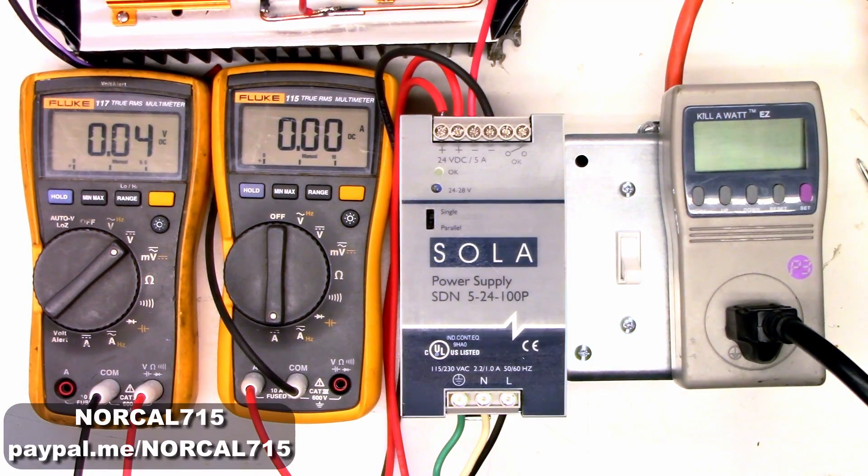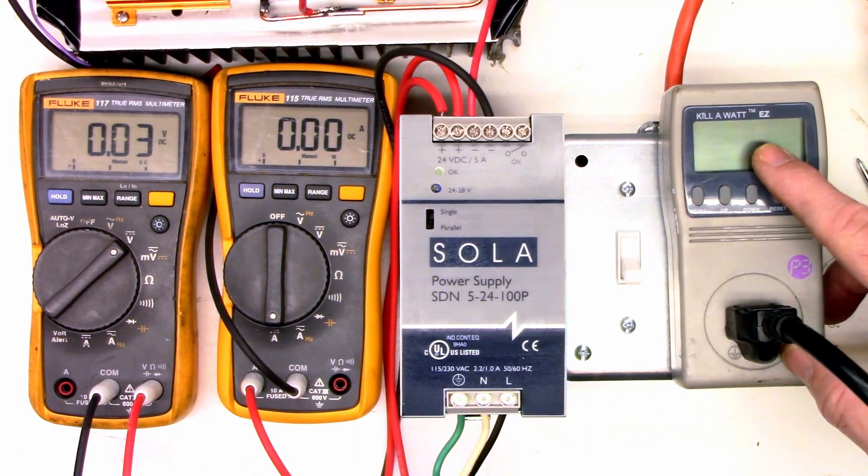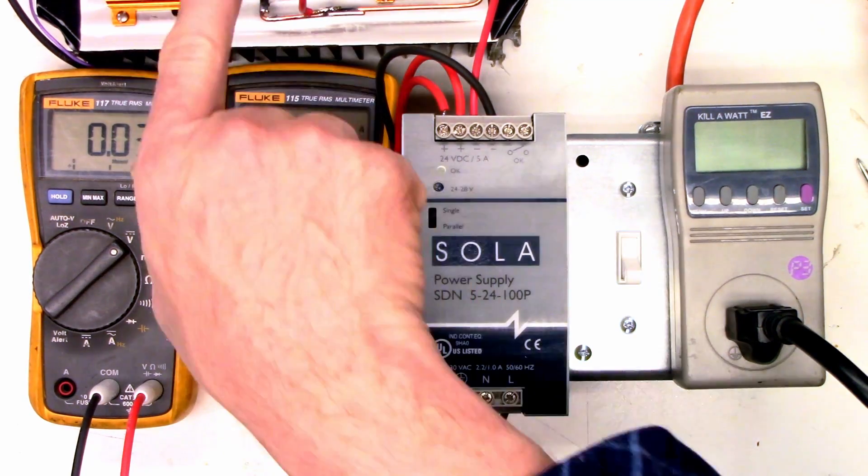I thought I would revisit the Sola power supply. I thought this unit had power factor correction built into it, but I think I was mistaken. I don't believe they're doing any power factor correction whatsoever. I've got my kilowatt meter plugged in here, and that does show power factor. The 115 is connected to amps.